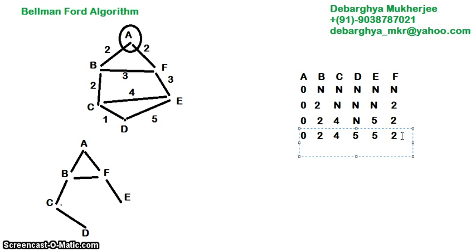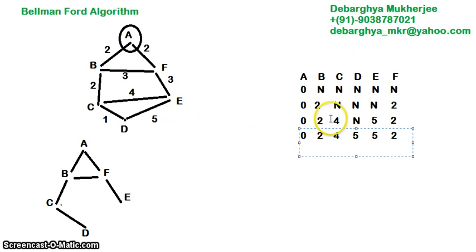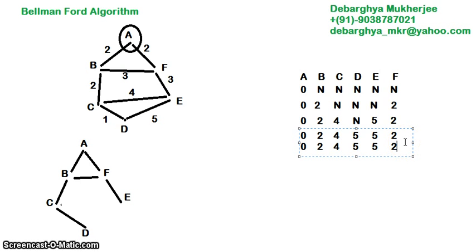Now we check paths from the newly discovered vertex D. From D we have two paths: D to C costing 1, and D to E costing 5. But these paths are already discovered — D to E would cost 5 plus 5 equals 10, and D to C would cost 5 plus 1 equals 6 — both worse than known values. So no update is needed. I simply copy the last step. If you have 6 vertices, there will be 6 iterations total, and in each iteration you discover paths step by step.